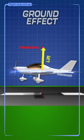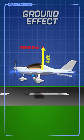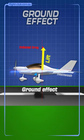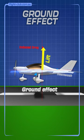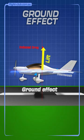This reduction in airflow leakage decreases induced drag. The aeroplane also experiences slightly increased lift without using more power, making it more efficient. This is called ground effect. Understanding ground effect helps student pilots optimize their flying techniques during takeoff and landing.